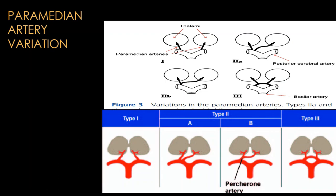There are basically four variations of the paramedian artery. Type 1 is the normal configuration. Type 2 is from a single side supplying both halves. Type 3, known as Percheron, is from a single trunk dividing and supplying both halves of the midbrain and the thalamus. Type 4 is from an arterial arcade supplying the midbrain as well as thalamus.